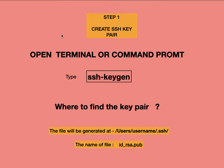Step one: create an SSH key pair. First of all, open the terminal. In the terminal, type the command 'ssh-keygen'. After running this command, it will ask for certain inputs — you don't need to do anything, just press Enter.